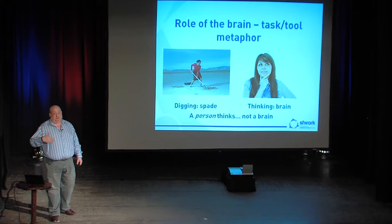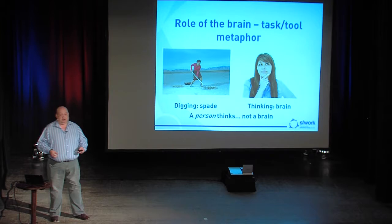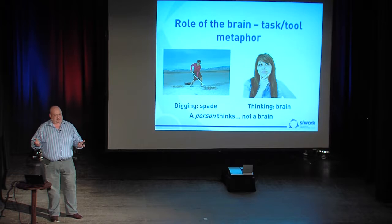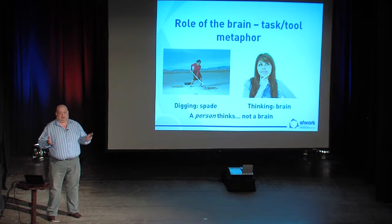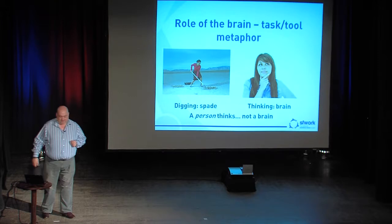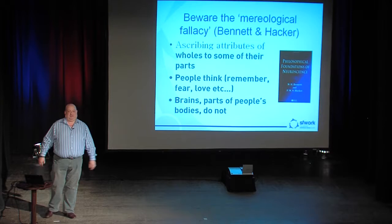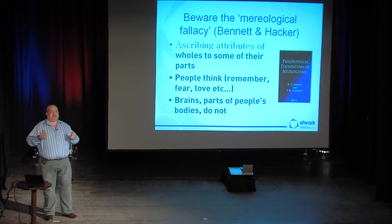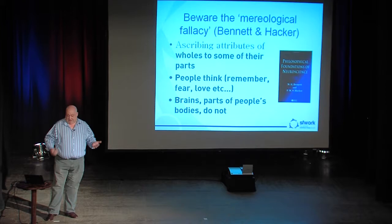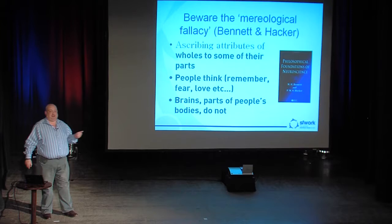If we want to study spades, we can study spades. If we want to study digging, we have to go and watch people digging. It's just the same with brains — we can study brains, and we should. That's kind of molecule stuff. If we want to study thinking, that's people stuff and that's meaning, and therefore we have to go and watch people actually thinking and doing things and see what counts as thinking. We're avoiding what is called the mereological fallacy — a good Latin word for the day — which is ascribing to a part of something a quality that should really only be ascribed to the whole of something. Brains don't think; people think. This is from the wonderful book Philosophical Foundations of Neuroscience by Bennett and Hacker.